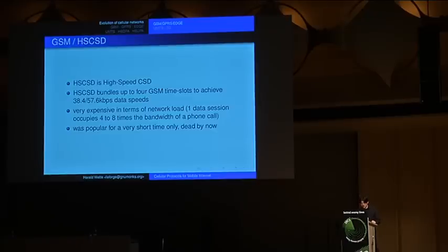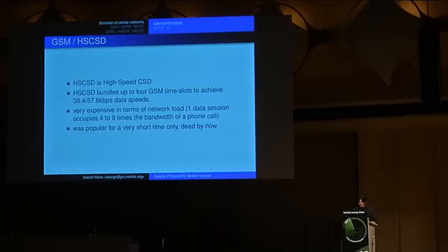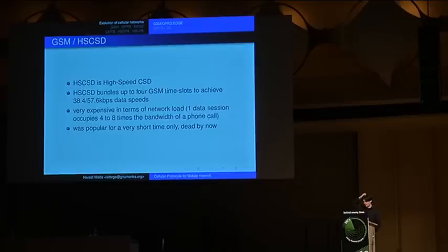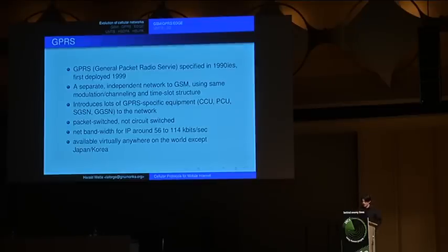Then there was HSCSD — channel bundling CSD. Imagine CSD is like an analog phone line with two modems, and now you have two, three, or four of these phone lines and get the aggregate bandwidth. There was the option to run 38.4 kilobits and 57.6 kilobits. However, it was very expensive because if you occupy four circuits you pay four times the money. It was popular for a very short time and died when GPRS came around.